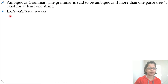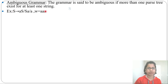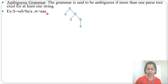Let's see one example. S tends to aS or Sa or a. If w equals 3a, then let's design the parse tree for 3a. From S you can derive aS, then again from this S you can derive aS, then again from this S you can derive aS. So this is just one parse tree for deriving 3a.